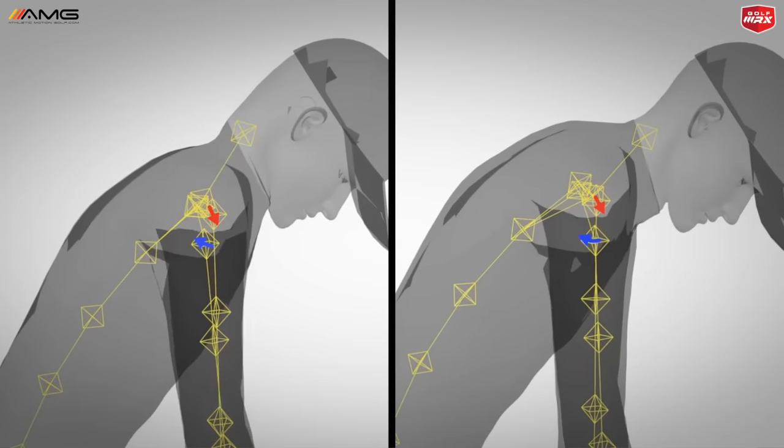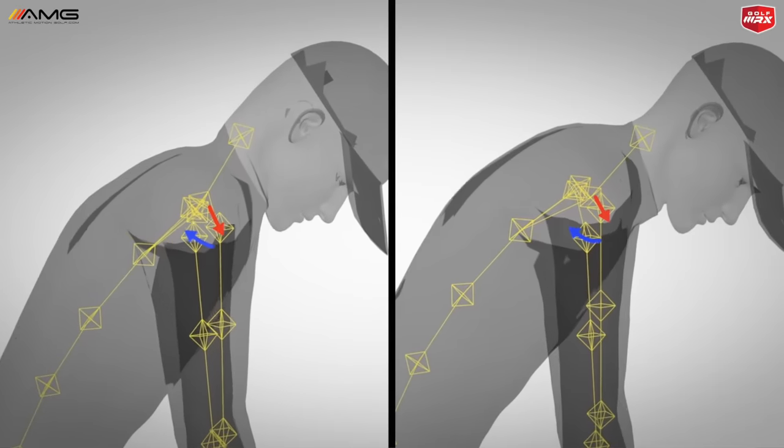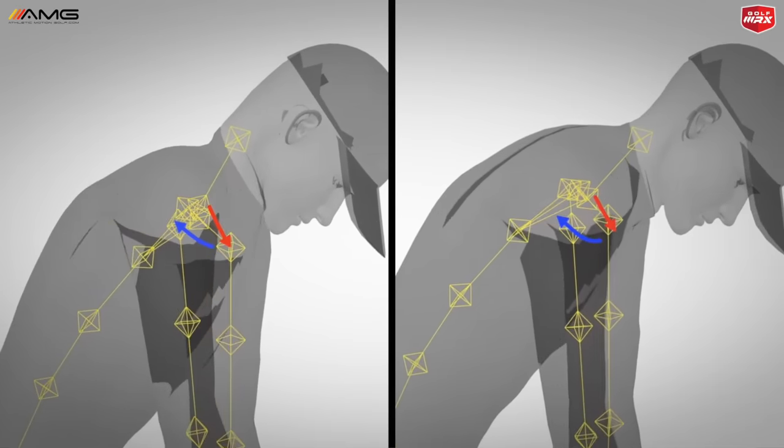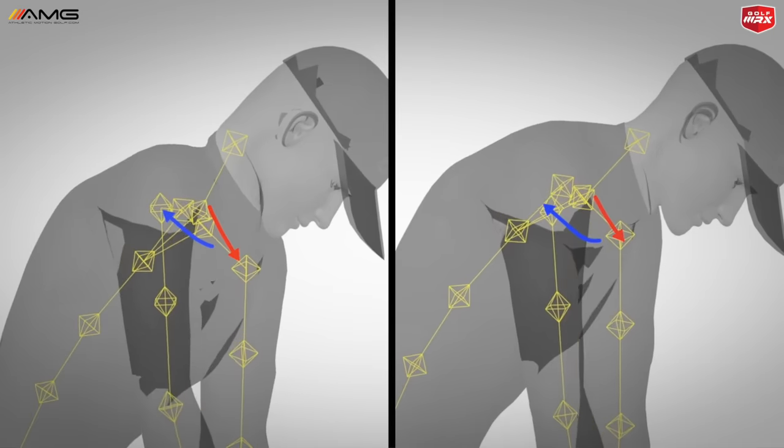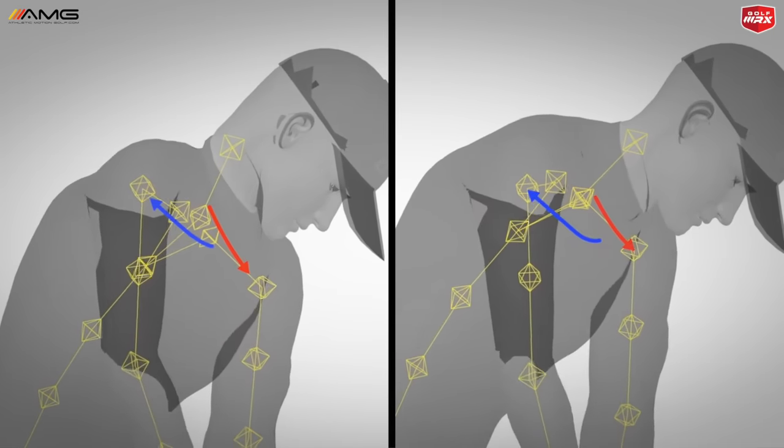In this episode of Pros vs. Ams, we're going to take a look at some very common right shoulder movements with professional golfers and compare those to what we commonly see with amateur golfers.